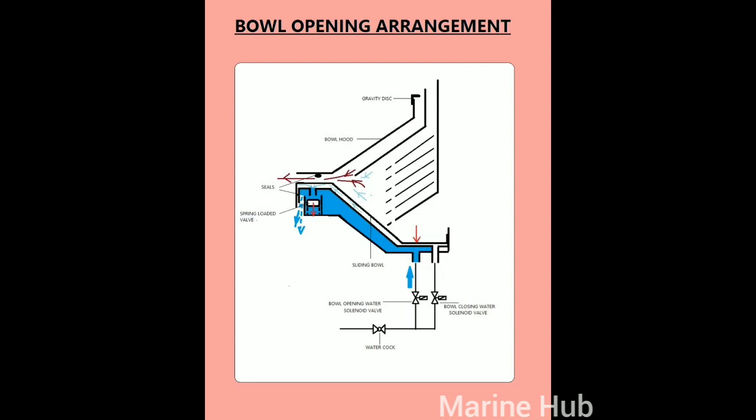Then the water will press the spring-loaded valve and let the water in the closing water chamber drain. Then the bowl will open and all the sludge will be discharged to prepare the bowl for a new cycle.